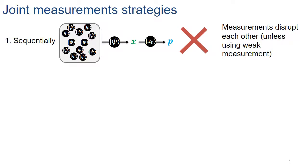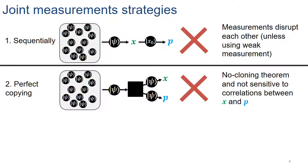To review: the first joint measurement strategy we considered was a sequential one. The reason this doesn't work is essentially because of measurement collapse — if we try to make a precise position measurement, it collapses the state to one of its eigenstates, and so the momentum measurement tells us nothing. There is a way around this, which is to make this position measurement weak, but I won't be discussing that in this video. Another strategy is to take one copy out of your ensemble and send it through a black box which creates two copies of that state, then measure position on one copy and momentum on the other. This doesn't work for the reasons just discussed, but also because of the no-cloning theorem: there is no black box that produces perfect copies of an arbitrary state.